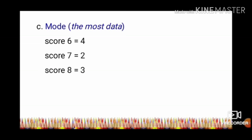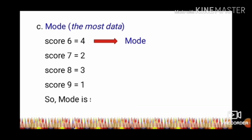C. Mode is the most frequent data. Score 6 appears 4 times. Score 7 is 2. Score 8 is 3. Score 9 is 1. So, mode is score 6.